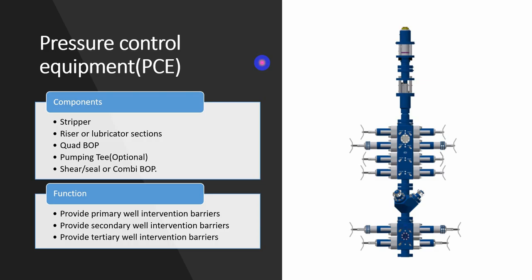Now we talk about pressure control equipment. It consists of many barriers — the term 'barrier' is used because it prevents fluid leakage at the surface. For example, the coiltube goes from the injector head and gooseneck to reach the well. Note that the injector head is mounted directly above the stack. What prevents leaks between the coiltube and the surrounding environment is an element called the stripper.